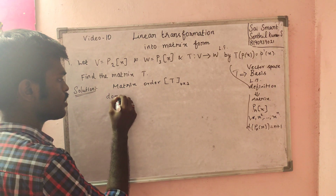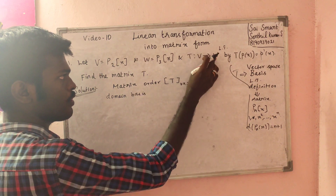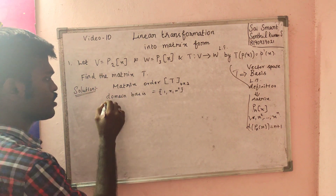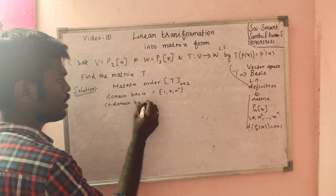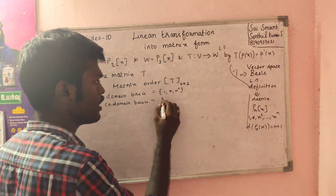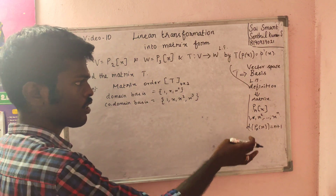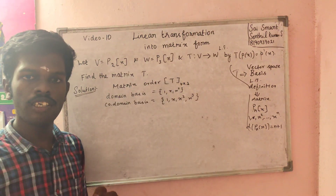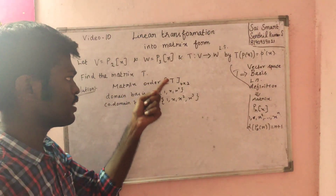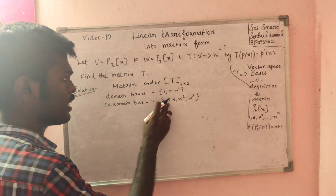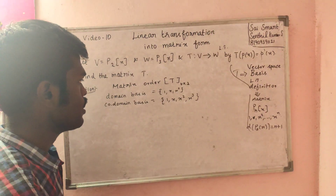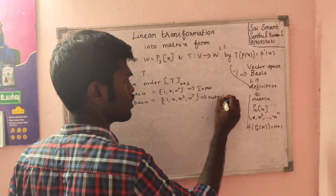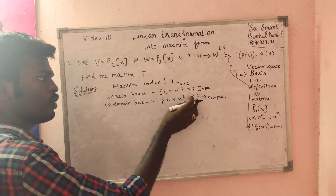Domain basis is V, which is P2 of x — so domain basis is {1, x, x²}. Codomain basis is W, which is P3 of x — so codomain basis is {1, x, x², x³}. P_n of x is the set of all polynomials of degree at most n.